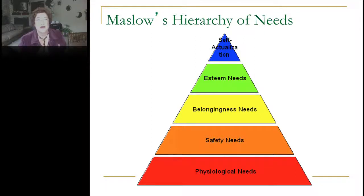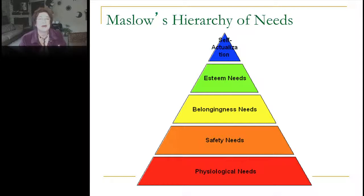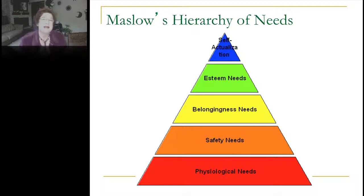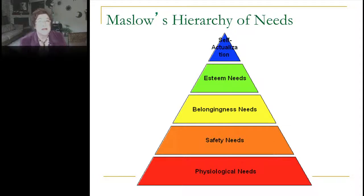Once you have shelter, clothing, and food, you'd want to know you'll have those same things tomorrow — safety. And once you had a decent place to live and clothes, you'd reach out for friends and belonging, and then eventually feeling good about yourself. Intuitively, Maslow's hierarchy of needs makes a lot of sense, and this can be applied to persuasive message design.